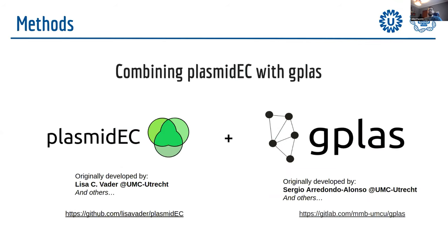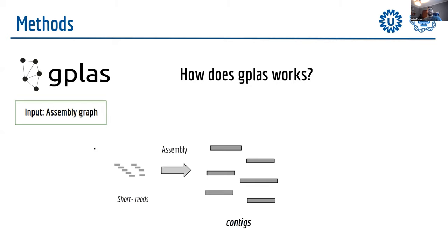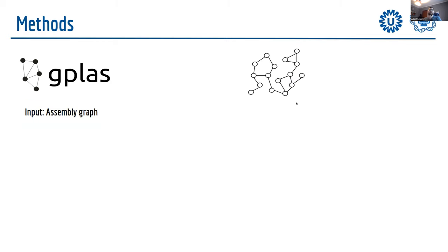We attempted to improve plasmid reconstruction in E. coli by combining two tools developed at UMC Utrecht: PlasmidEC, developed by Elisa Vader, and GPlas, originally developed by Sergio Arredondo-Alonso. To understand what we did exactly, we need to understand how GPlas works. Importantly, GPlas takes as input an assembly graph — after assembly, beyond contigs, we also obtain information about how contigs are potentially connected to each other, which is called the assembly graph.